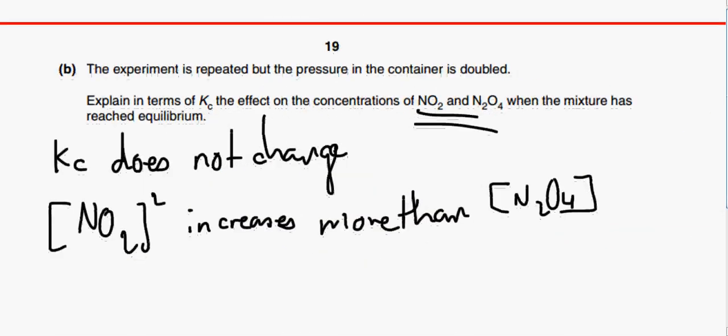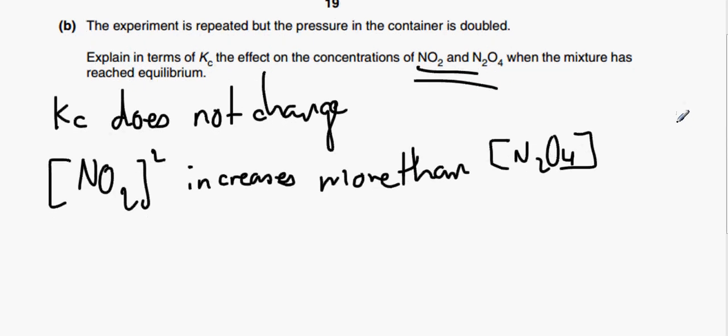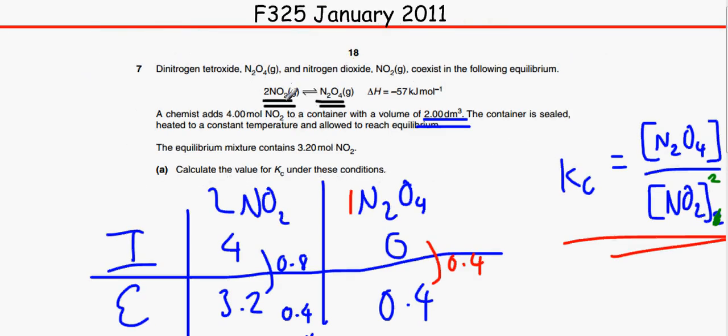And then we need to talk about what happens so Kc does go back to its original place. Obviously with Le Chatelier's principle, we want to minimize the changes in a dynamic equilibrium. So therefore, seeing as we've got two moles of NO2 here, we would want to shift the position of equilibrium to the right.